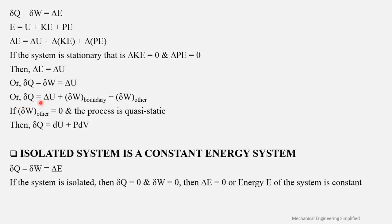If other work is zero and the process is quasi-static — that is, occurring infinitely slowly — then the boundary work δW becomes p·dV, and the first law takes the form δQ = dU + p·dV.